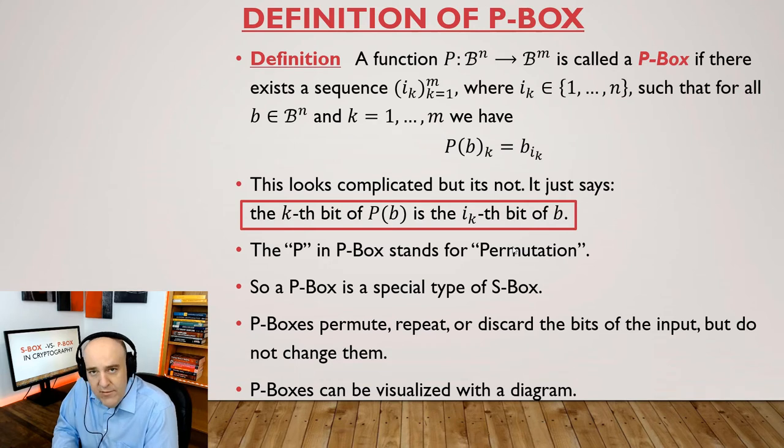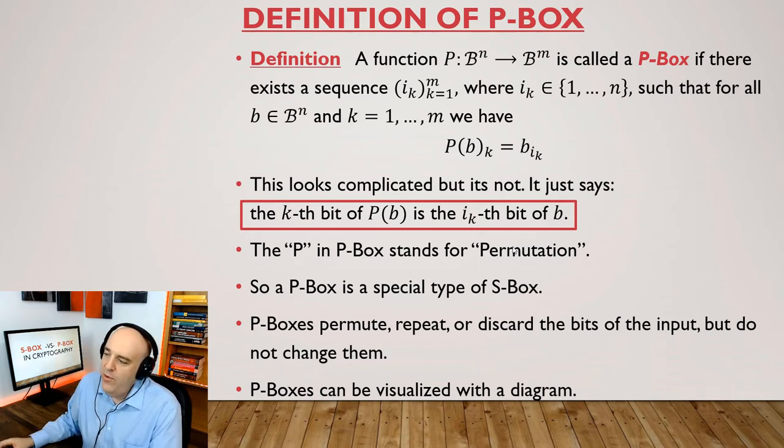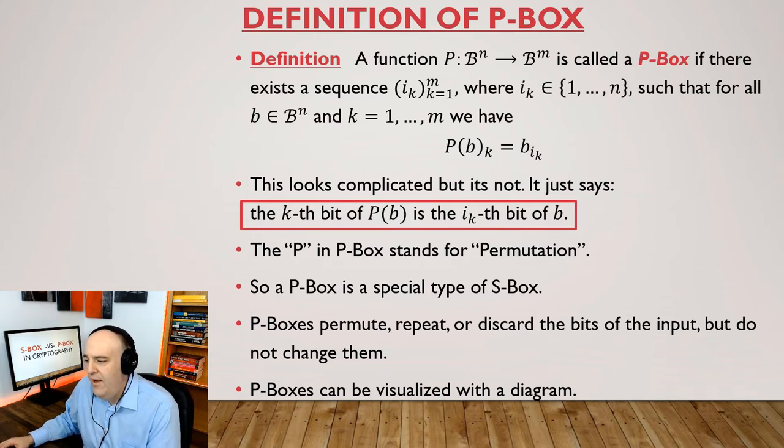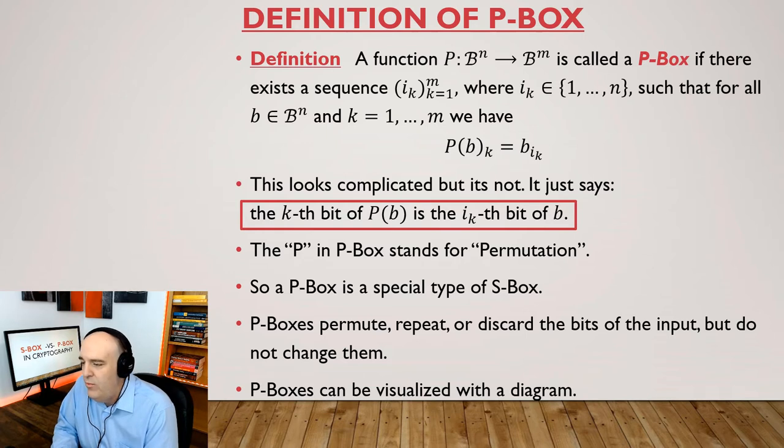Now, let's talk about a P-Box. So this looks complicated here, but it's not. Let's take a function P going from BN to BM. And we'll call that a P-Box. If there's a sequence IK, where K starts from 1 to M. And each IK lies between 1 and N. And we require that for any input value B, that the K-th bit of P of B is just the IK-th bit of B. So I know that seems a little bit complicated, but when we do an example, it'll become better on the next slide.